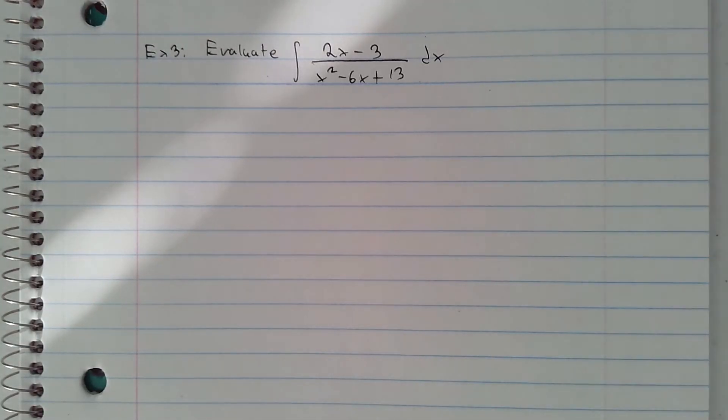In this example we'll evaluate the integral of 2x minus 3 over x squared minus 6x plus 13. The denominator is not factorable, so we'll complete the square.